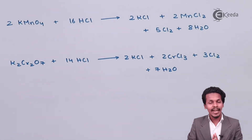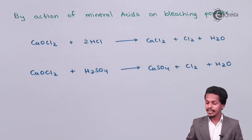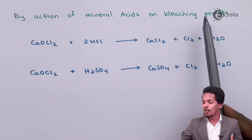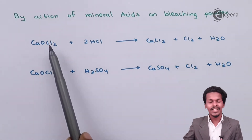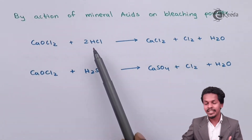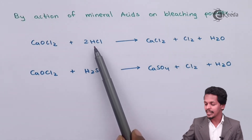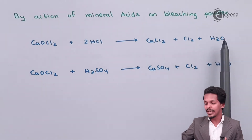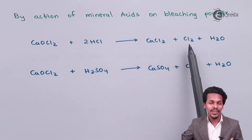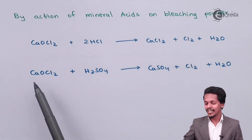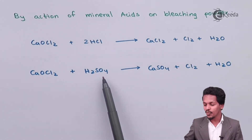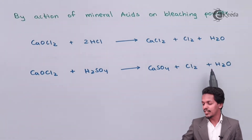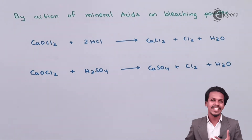The next method is obtaining Cl2 by the action of mineral acids on bleaching powder. CaOCl2, that is bleaching powder, when treated with HCl — a mineral acid — gives calcium chloride along with H2O as a byproduct, and Cl2 is obtained. When bleaching powder is treated with H2SO4, the product is calcium sulfate (CaSO4) along with H2O as a byproduct, and Cl2 gas is produced.